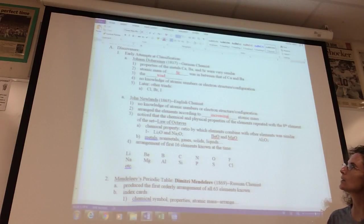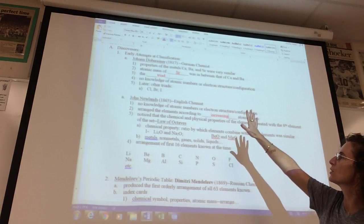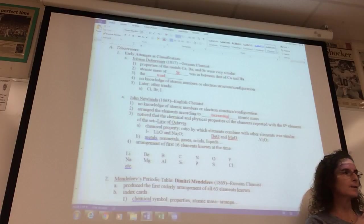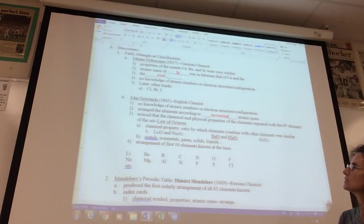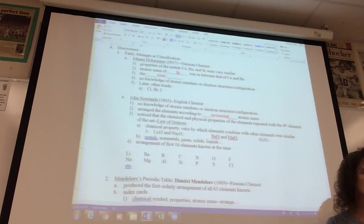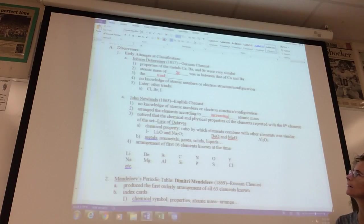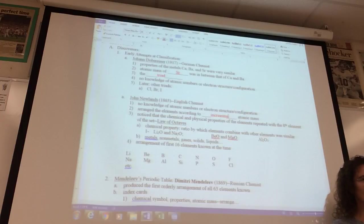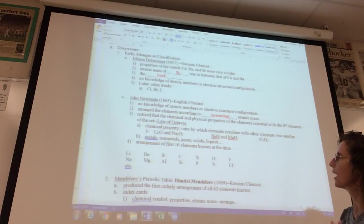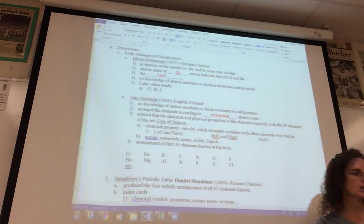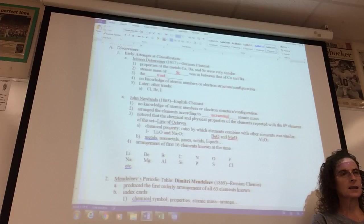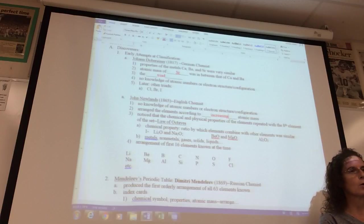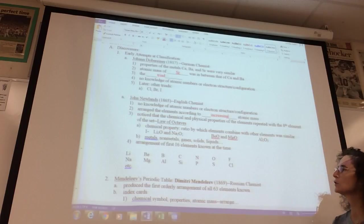We already talked about the first attempt at classifying the different elements, and we mentioned the triads. The first blank is strontium and the third blank is triad. A triad is a group of three elements that has similar properties. From there, John Newlands took it a step farther. He didn't know anything about atomic number or electron configuration, but he took those first 16 elements and he listed them according to increasing atomic mass. What he noticed is that there was repetition with the eighth element of the set. He noticed that those elements had similar physical and chemical properties.